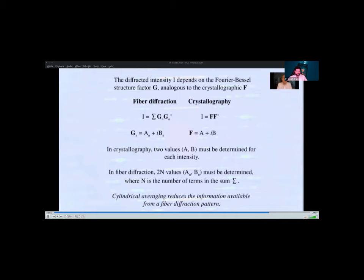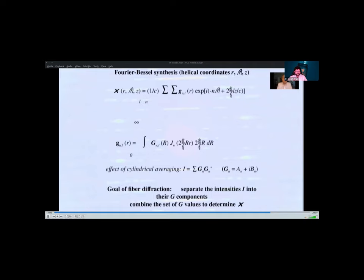But that doesn't mean that electron density can be calculated. If you know all of these complex G terms, often called Bessel terms, because each G depends on one order of Bessel functions, J, Rosalind, Ken and Aaron had ideas about separating two Bessel functions by isomorphous replacement or some other technique, but they were not able to make them work.